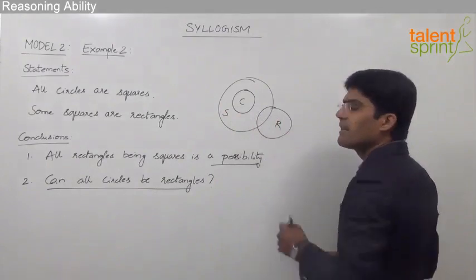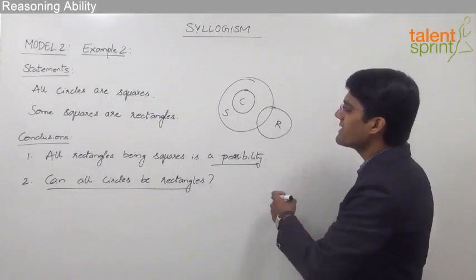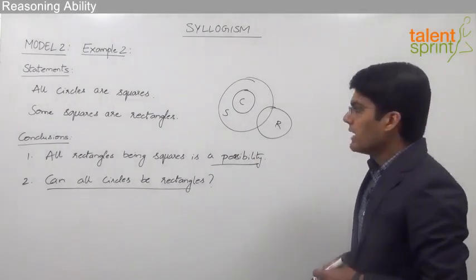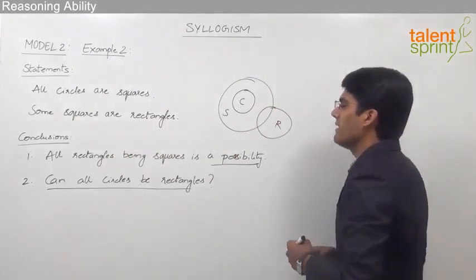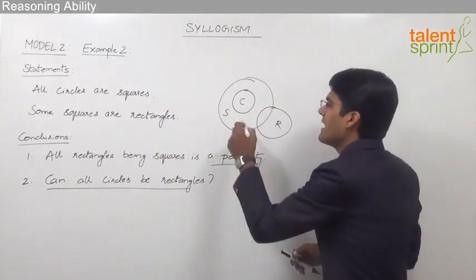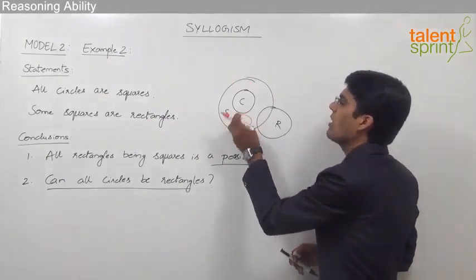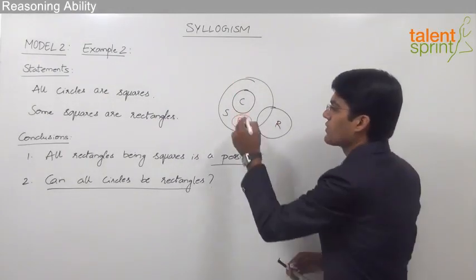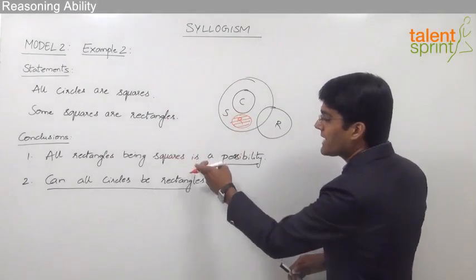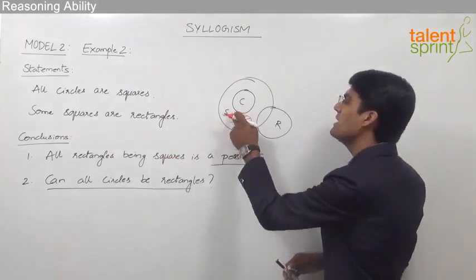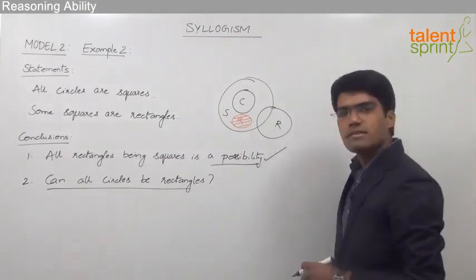The first conclusion is: all rectangles being squares is a possibility. Looking at the second statement — some squares are rectangles — we can draw rectangles such that all rectangles are inside squares. So all rectangles being squares is a possibility from this diagram, and the first conclusion is true.